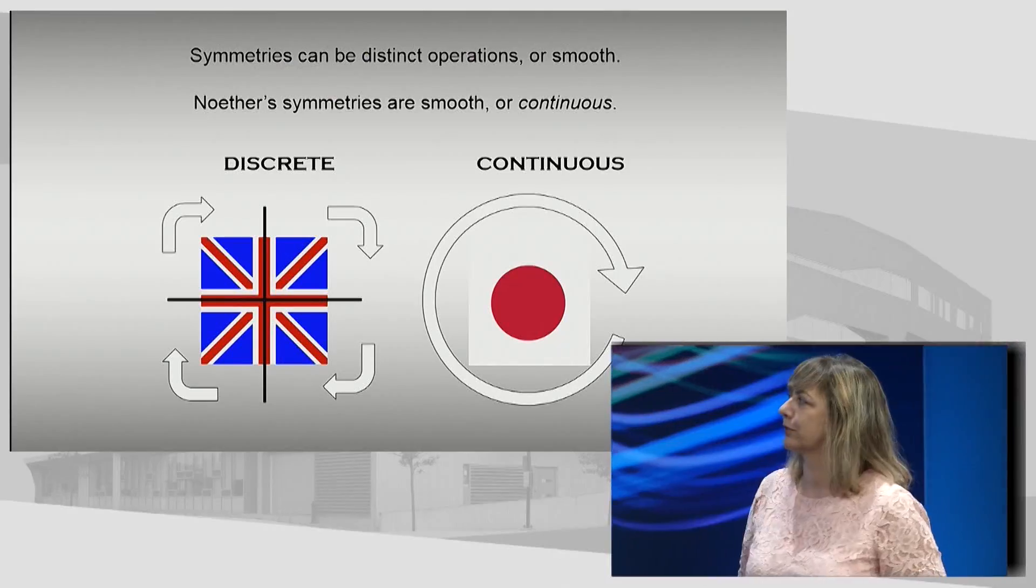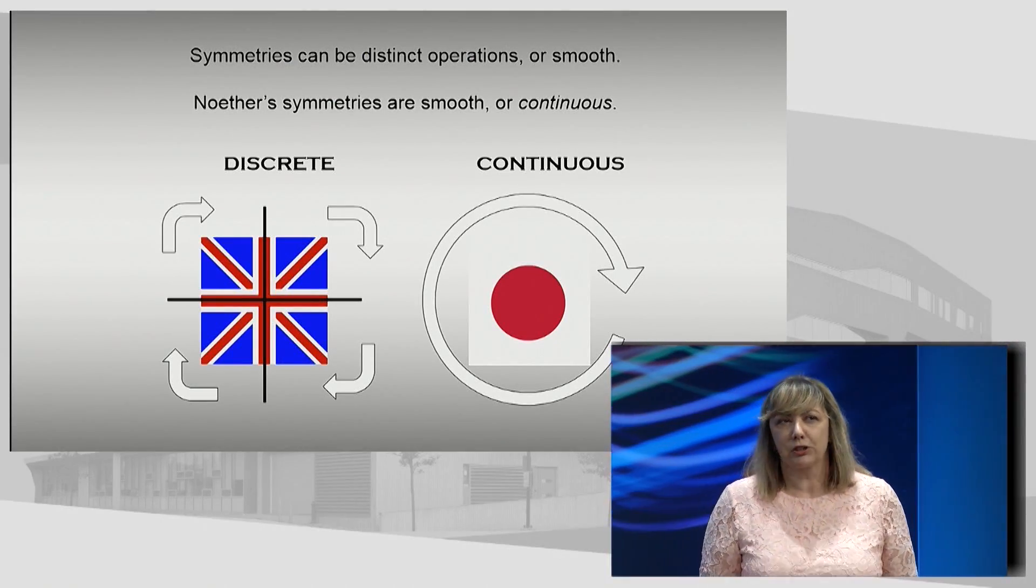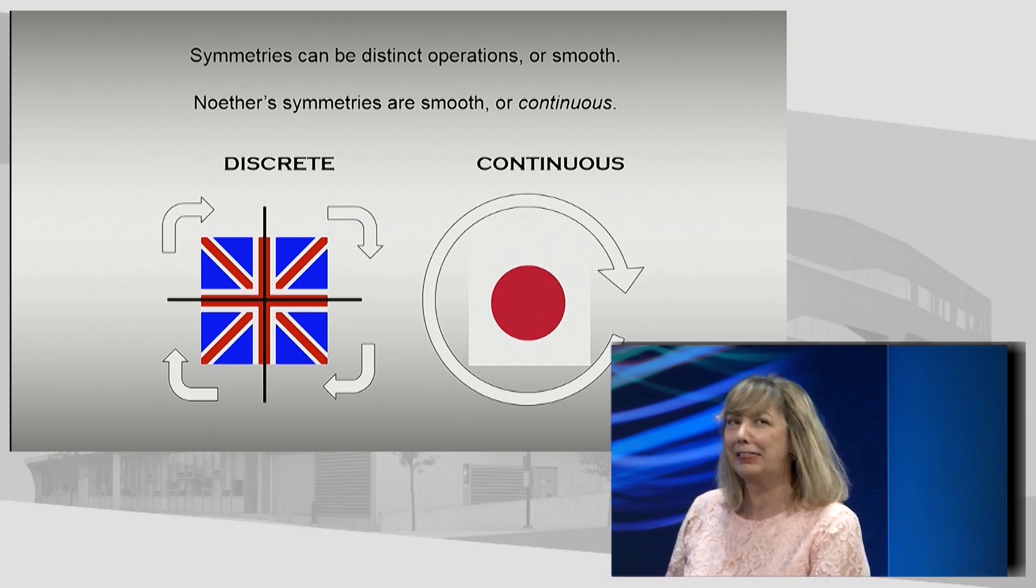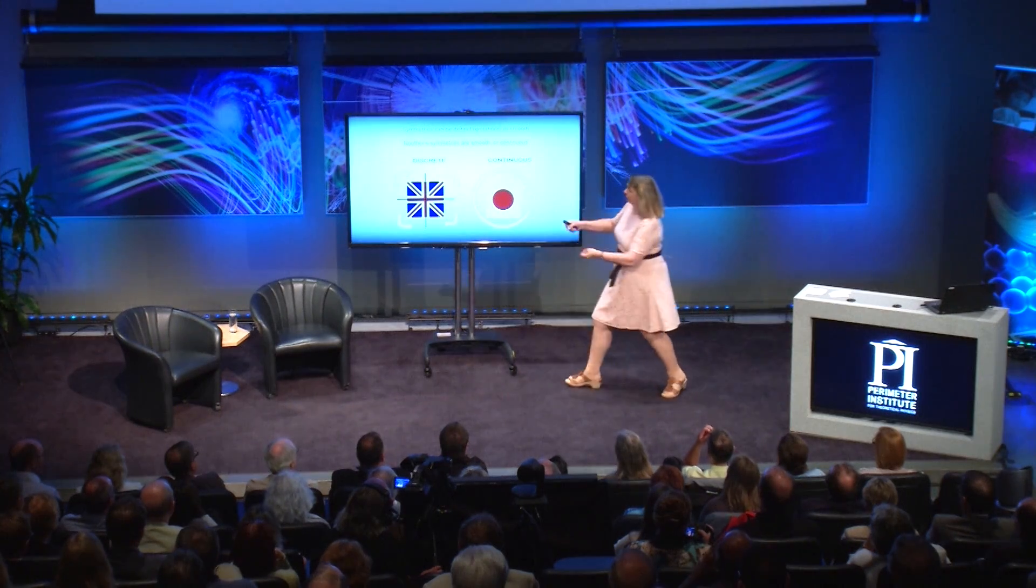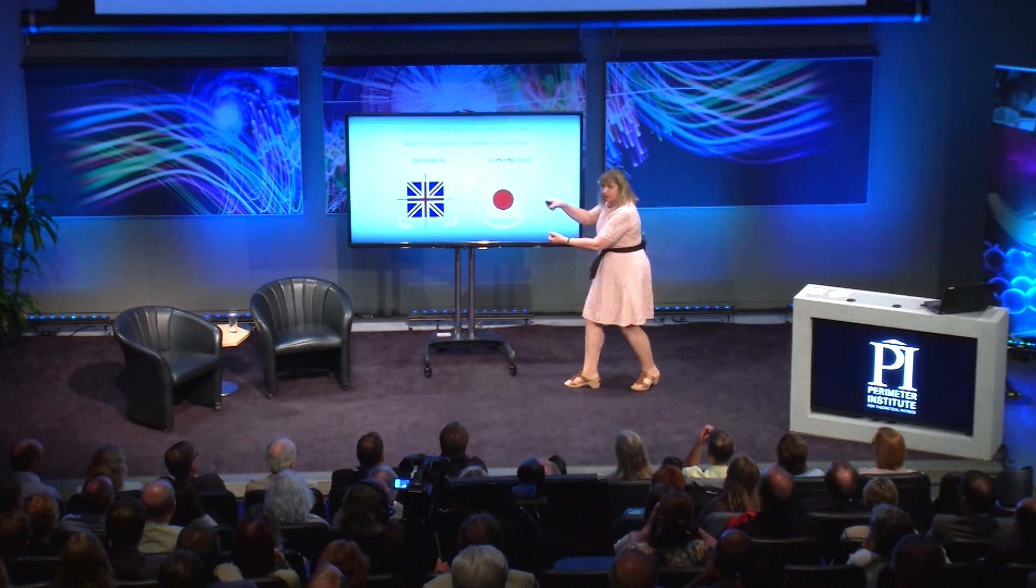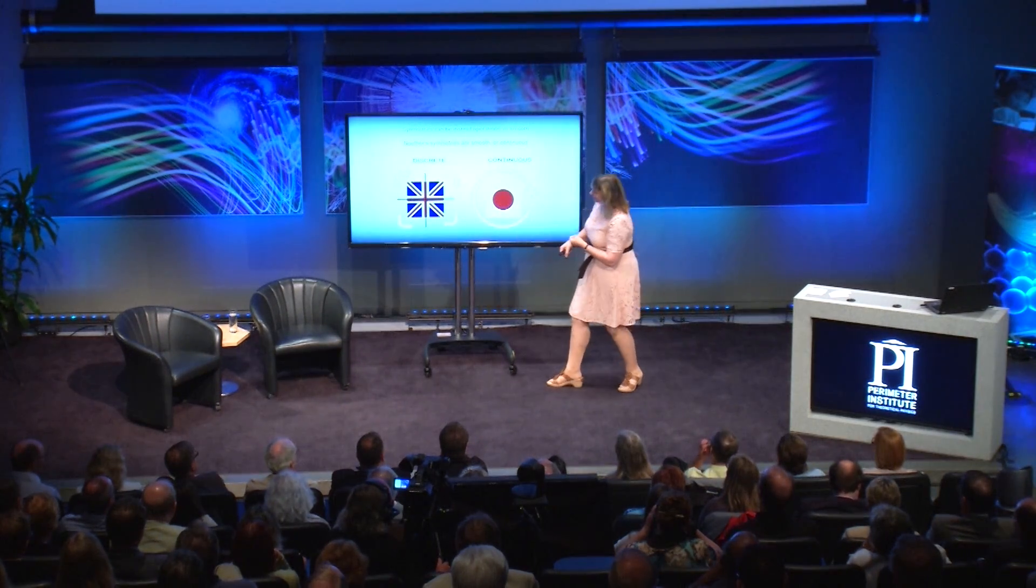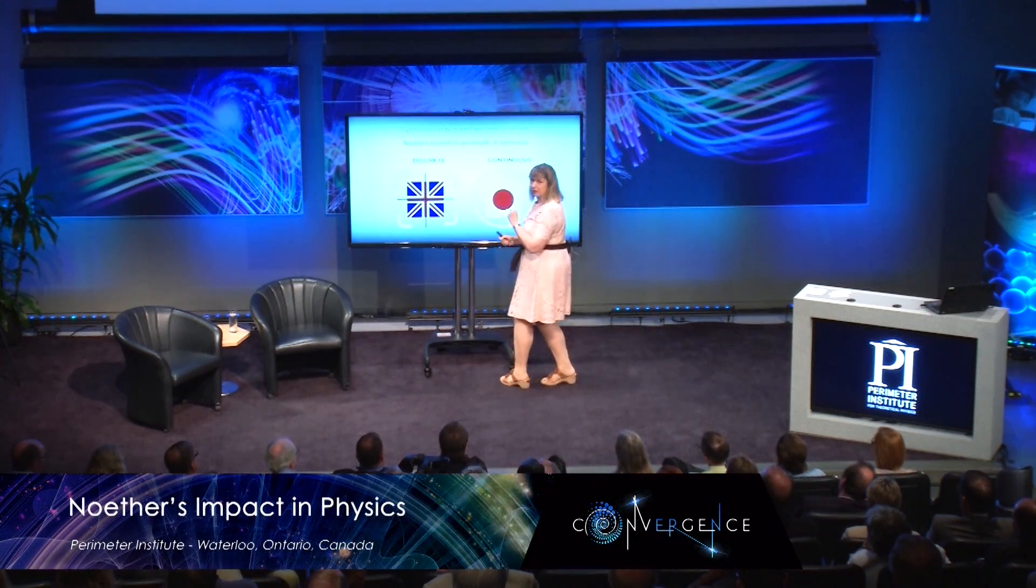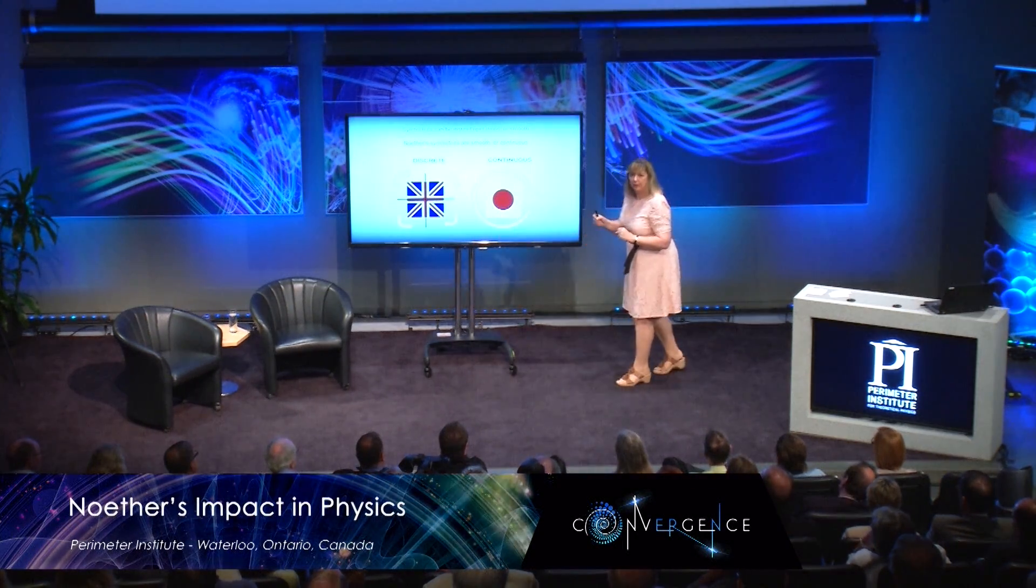And as Peter mentioned, we've got two sorts of symmetry. I sort of feel a bit like Sheldon Cooper's fun with flags here. Nonetheless, fun with flags. Here is talking about symmetries. Symmetries can be distinct operations. We can have discrete symmetries. We can pick up our idealized Union Jack and turn it round through 90 degrees. We can reflect it. But these are sort of a finite set of operations.